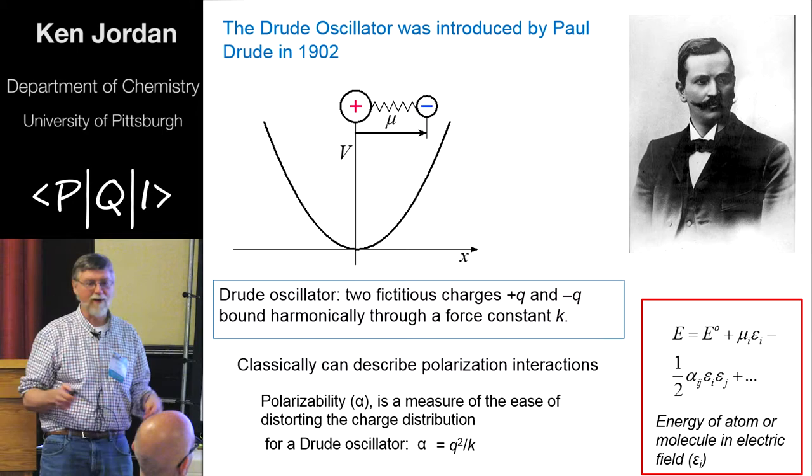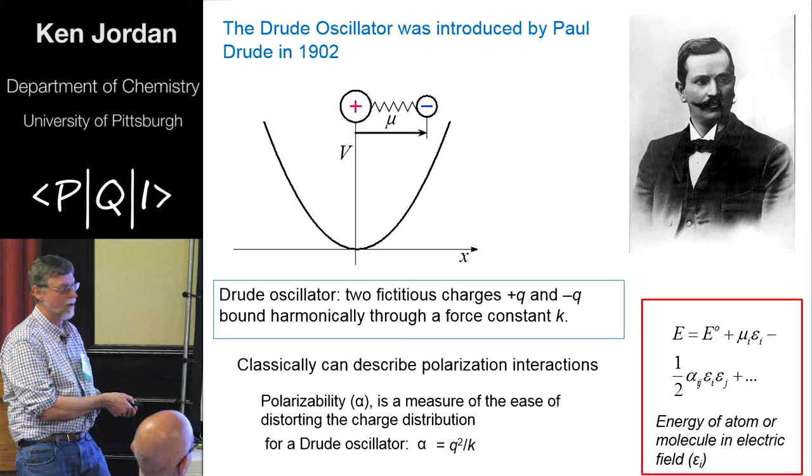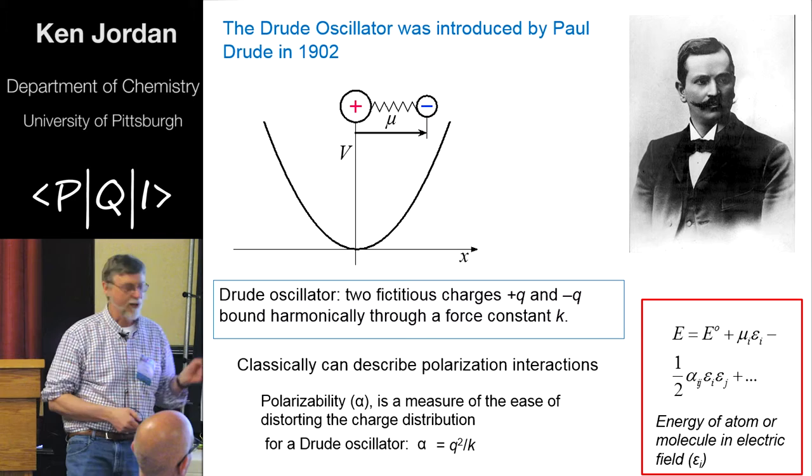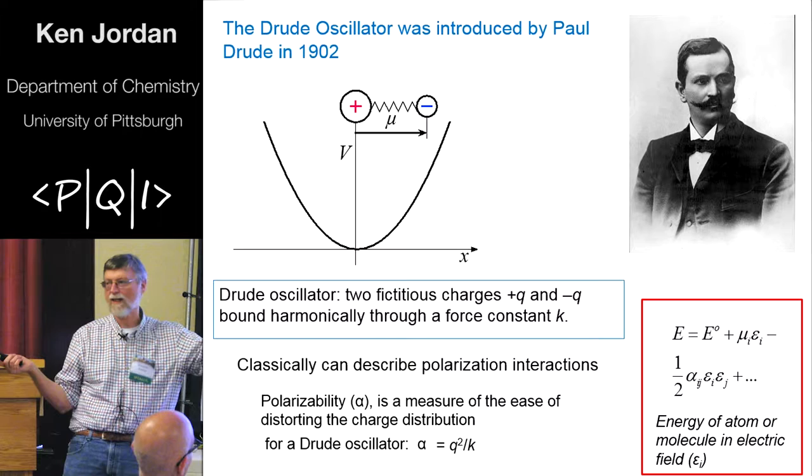So, it's a back of an envelope calculation that if you put this system in an electric field, the polarizability is Q squared over K. So K is the force constant, Q is the fictitious charge.